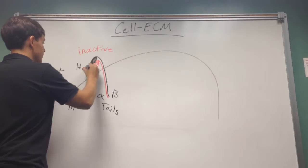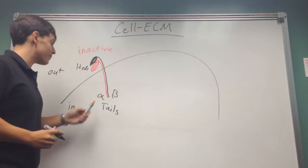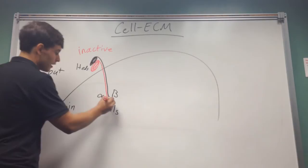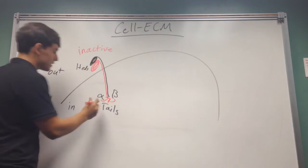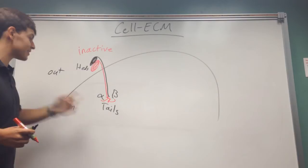So, in the inactive form, what causes it to be inactive is the fact that the alpha and beta tails are connected to each other. So, they almost inhibit each other just by being present and next to each other. So, it's not the fact that this region is close to each other or the heads are next to each other. It's the fact that alpha and beta tails are bound.